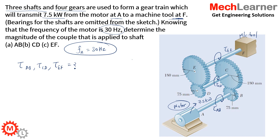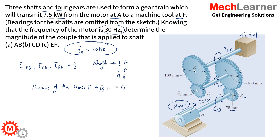In this question there are three shafts — EF, CD, and AB — and four gears: gear E, gear C, gear B, and gear D. The radius of gears D and B is 75 mm, which converts to 0.075 meters. The radius of gears C and E is 180 mm, which is equal to 0.180 meters.